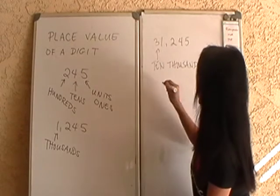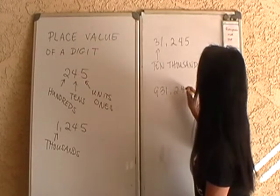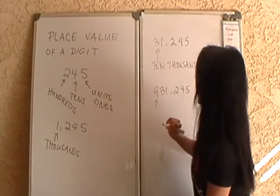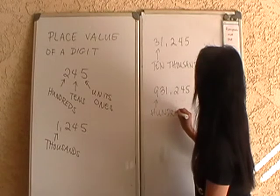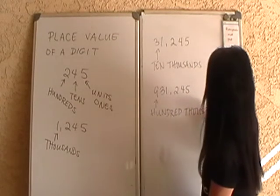And then if I have, let's say, 931,245, then that 9 there occupies the hundreds thousands place. One more?